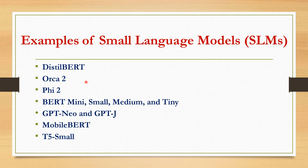Next is Phi-2. Microsoft Phi-2 is a transformer-based small language model engineered for efficiency and adaptability in both cloud and edge deployments. According to Microsoft, Phi-2 exhibits state-of-the-art performance in domains such as mathematical reasoning, common sense, language understanding, and logical reasoning.